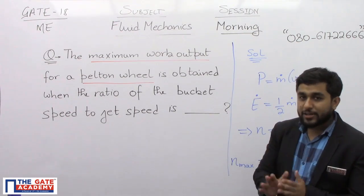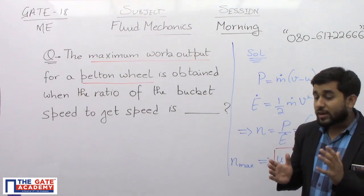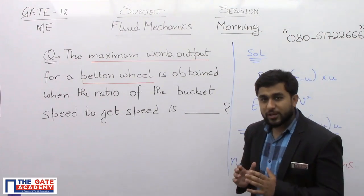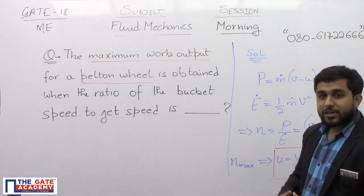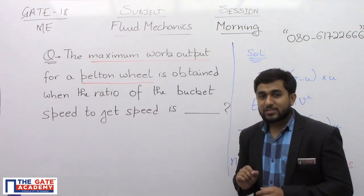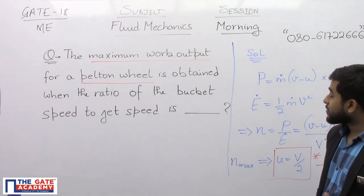What is the bucket speed? It is the linear speed of the buckets, the buckets that are fixed to the runner of the turbine. What they are asking is that for a given jet speed, or if the given jet speed is known, what should be the bucket speed? That is what should be their corresponding ratio, so that the work output is maximum. And obviously, when work output is maximum, this means the efficiency should be maximum.